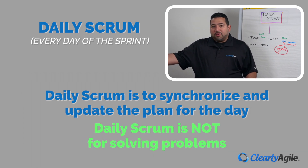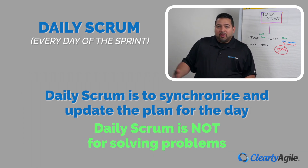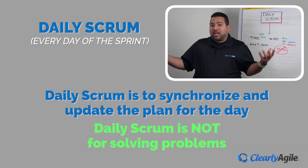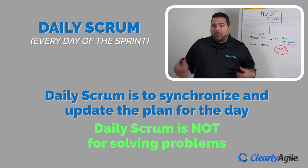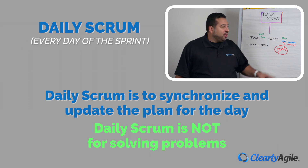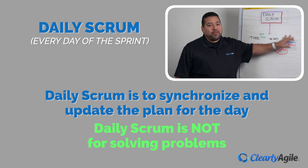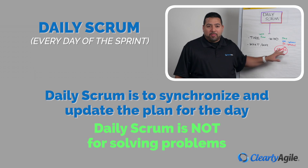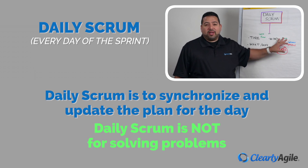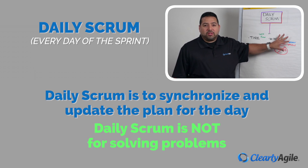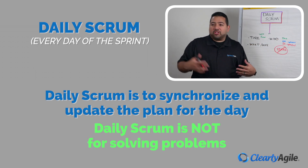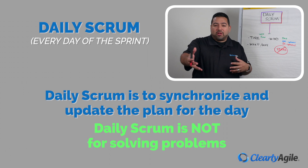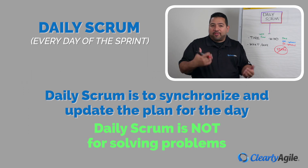If Jonathan runs into an error — say, error 305 or whatever that error might be — we're not solving that in the daily Scrum. The daily Scrum is not for solving problems; it's for making an adjustment to the sprint. In that case, Mark tells Jonathan: I know how to solve that, I'll get with you afterwards.